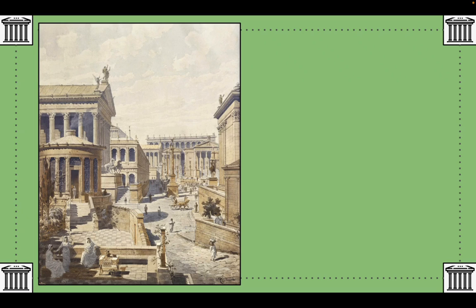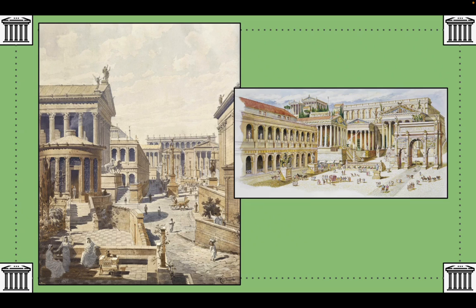If Rome was the center of the empire, then the Forum was the center of Rome. The Forum means 'gathering place' and it was an open area used for merchant stalls and for viewing races, games, and plays. Eventually it became a sprawling complex of government buildings, meeting halls, temples, theaters, and monuments — the heart of life in Rome.